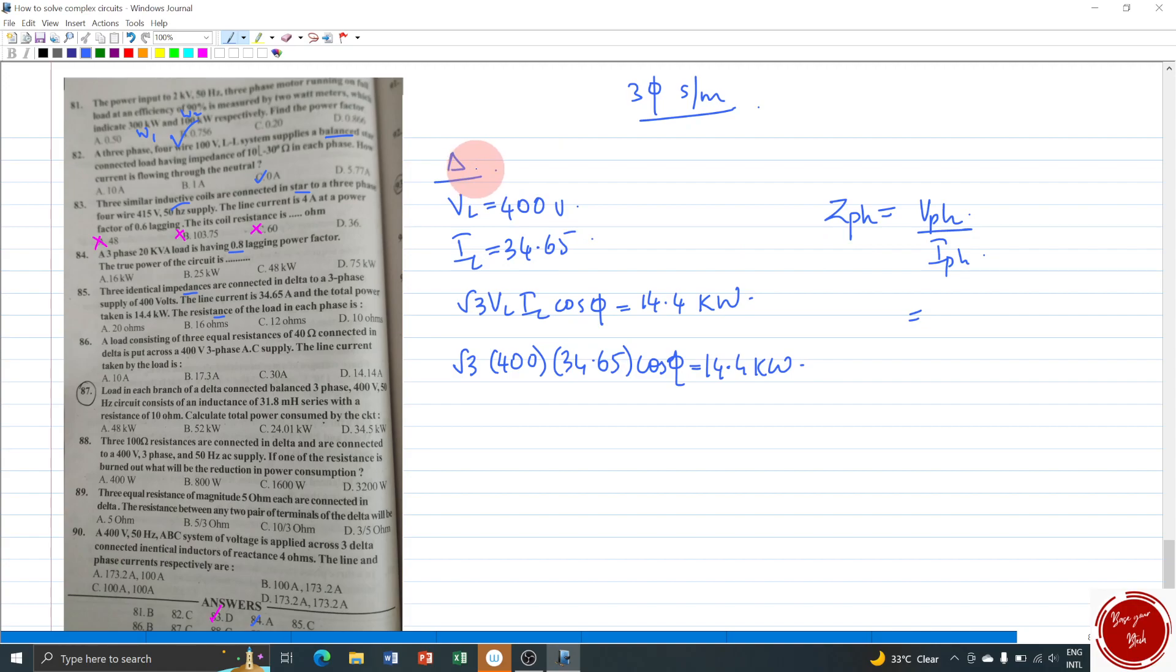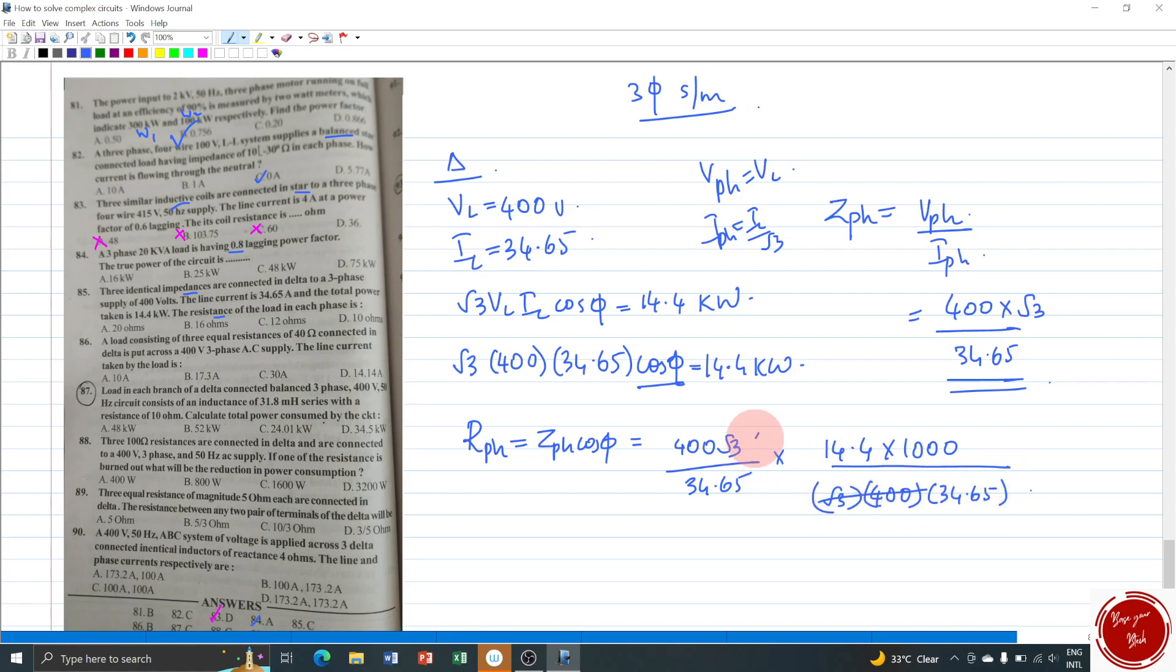Before getting this resistance, let us find out what is Z phase. Z phase is V phase by I phase. And V phase for a delta connection, V phase is equal to VL. V phase is 400 itself divided by I phase. I phase is IL by root 3. That is 34.65 divided by root 3 becomes in the numerator. So this is your Z phase value. And we know that R phase is Z phase cos phi. Cos phi, I can get the cos phi result by simple taking something to right side. Before that, let me write Z phase. Z phase value is 400 root 3 by 34.65. Cos phi from this big length equation, that is 14.4 and kilo. Kilo becomes into 1000 divided by everything near to this cos phi comes in the denominator. So the numerator root 3 and 400, then 34.65.